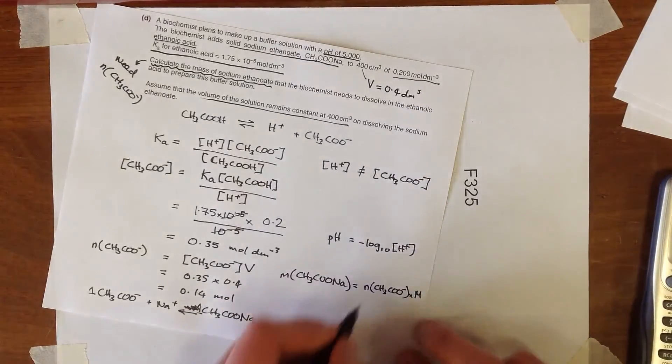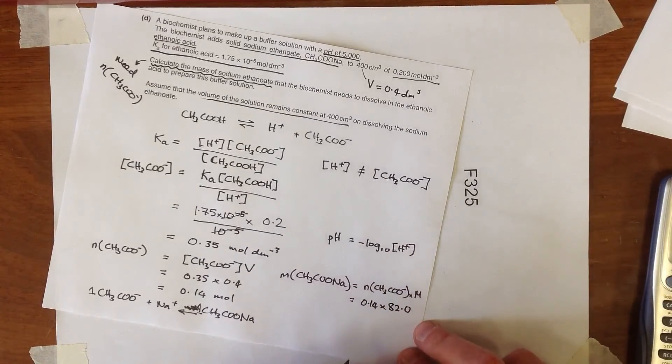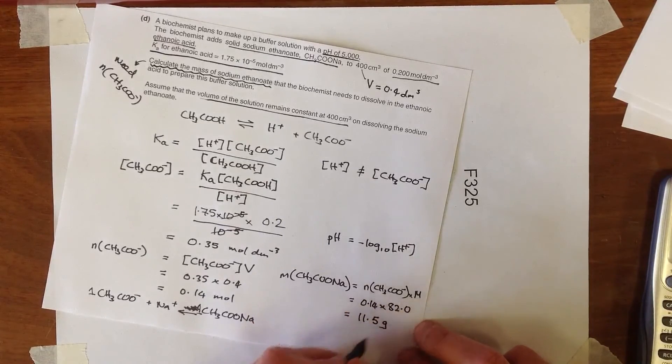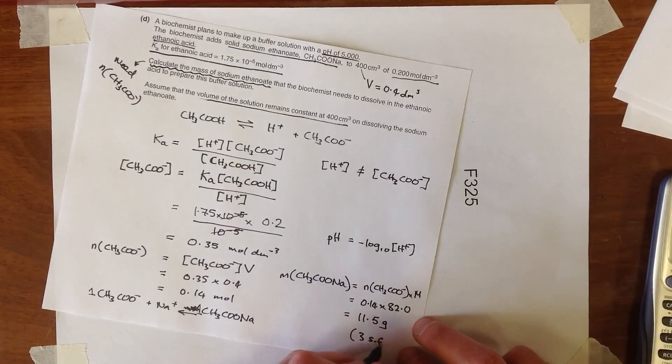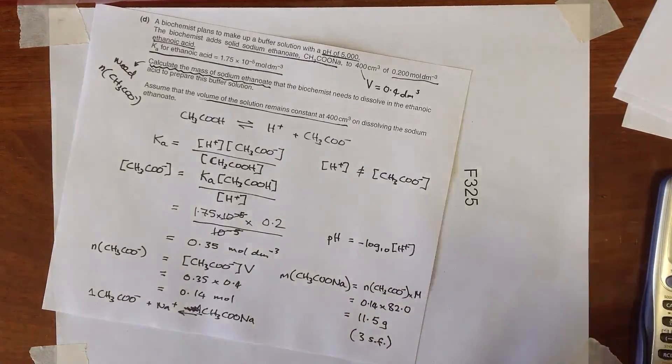The number of moles is [CH3COONa]. And we need to multiply that by the molar mass, which in this case is going to be 0.14 multiplied by 82.0 for the molar mass. And then when we work that through, that turns out to be 11.5 grams to three significant figures. So this was just adding up the relative atomic masses of the constituent atoms in here.